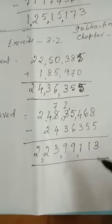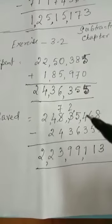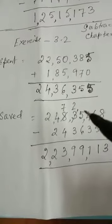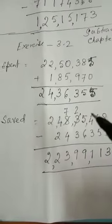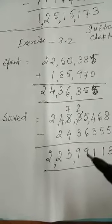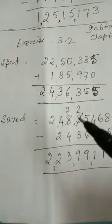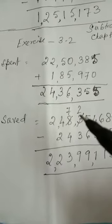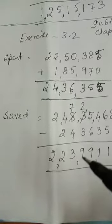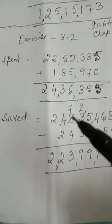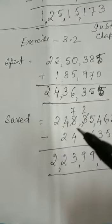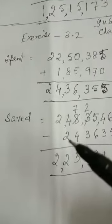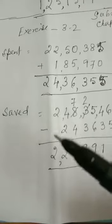8 minus 5, 3. 6 minus 5, 1. 4 minus 3, 1. Since 5 is smaller than 6, borrow 1. So here you get 15 minus 6 is equal to 9. Then again, you borrow 1. So, 12 minus 3 is equal to 9. Then here, 7 minus 4 is equal to 3. 4 minus 2 is equal to 2. And ultimately, bring down these 2 here.